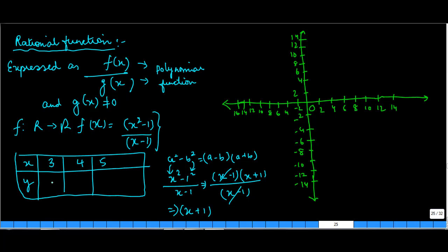So if the value of x is 3, the value of y will be 4. If x is 4, y will be 5. If x is 5, y is 6. Shall we draw it on the graph? So the points are (3, 4), (4, 5), and (5, 6).